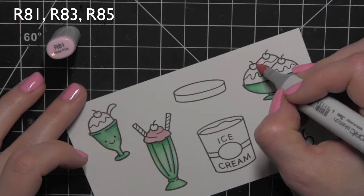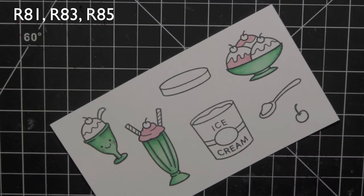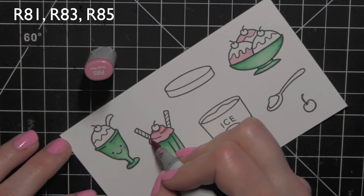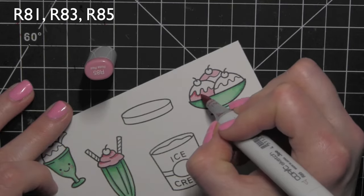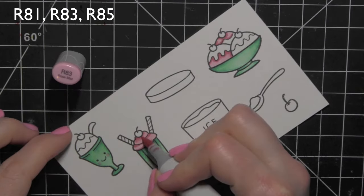For the pink or strawberry ice cream and strawberry topping I'm using R81, R83 and R85. Coloring it in with my base color which is the lightest color, the R81.